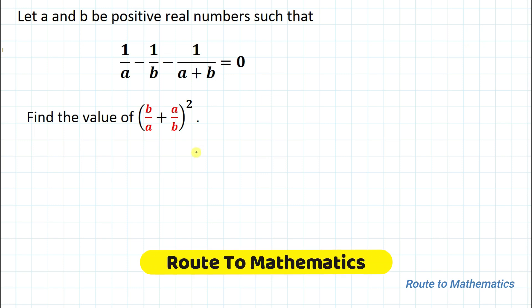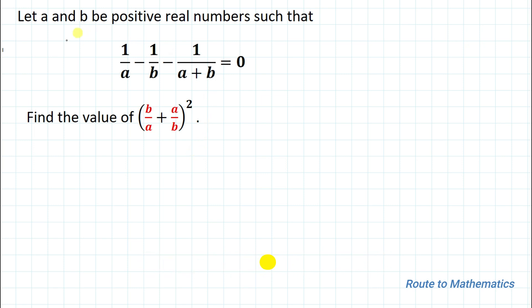Hello everyone, welcome to Root 2 Mathematics. In this video we are going to solve this interesting Olympiad question. The given question is: let a and b be positive real numbers such that 1/a - 1/b - 1/(a+b) = 0, then find the value of (b/a + a/b)².